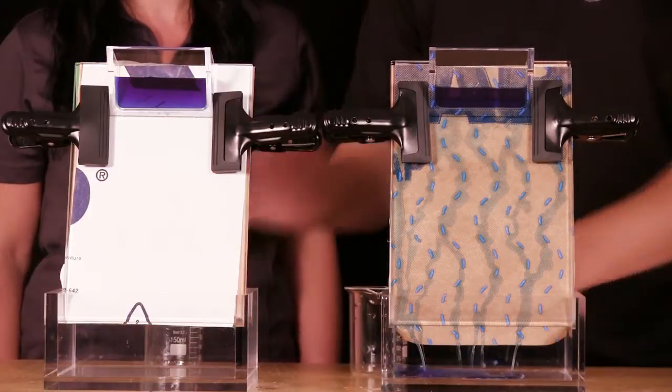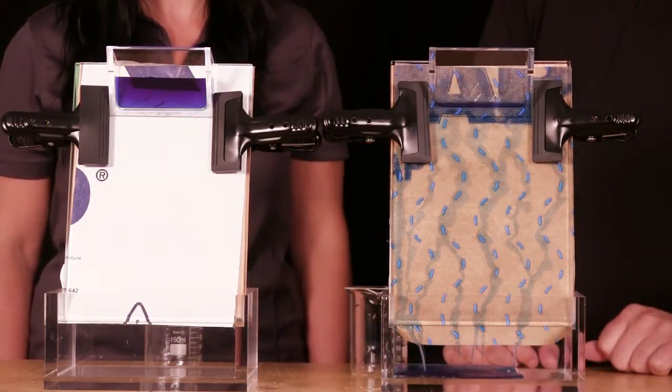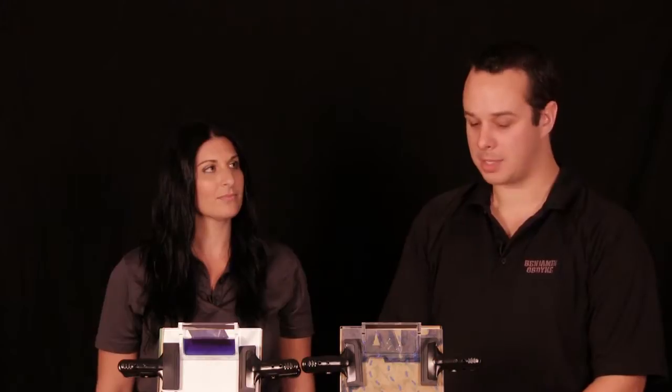As you can see before I even finish filling, the Hydrogap is already starting to drain, whereas the flat house wrap is not. So the Hydrogap is superior with a one millimeter space over your standard house wrap.